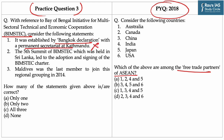Statement 1 is incorrect because BIMSTEC is a regional organization consisting of 7 member states which came into being in 1997 through the Bangkok Declaration. However, the Permanent Secretariat of this organization is in Dhaka, not Kathmandu. Statement 2: The 5th Summit of BIMSTEC, which was held in Sri Lanka, led to the adoption and signing of the BIMSTEC Charter. This statement is correct — the main outcome of the 5th summit was the adoption and signing of the BIMSTEC Charter, which formalized the grouping into an organization.